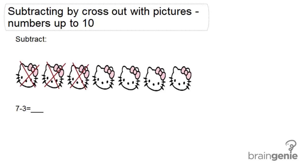Subtracting by cross out with pictures, numbers up to 10. Subtract. 7 minus 3 equals blank.